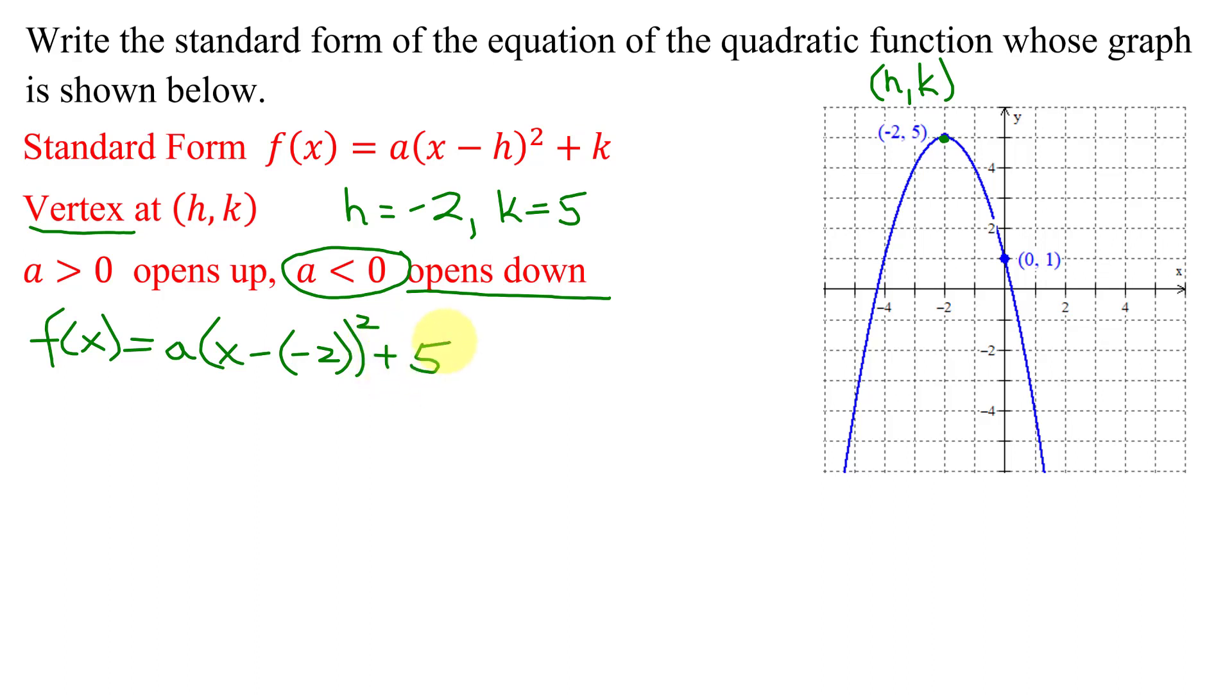Well, simplifying this expression, minus a negative, you always add the opposite. So that's going to give me f of x equals a times (x plus 2) squared plus 5.